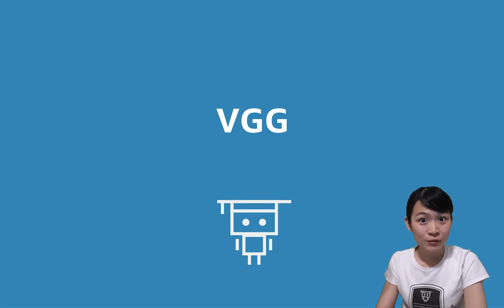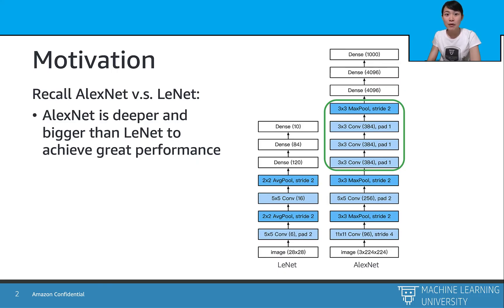Let's explore VGG network in this lecture, which is a more advanced convolutional neural network. First, let's have a quick recall over AlexNet and LeNet.